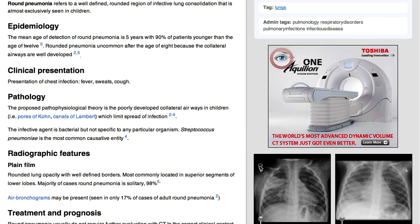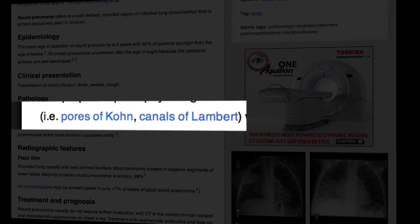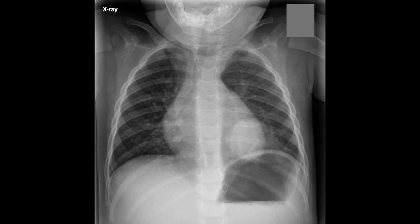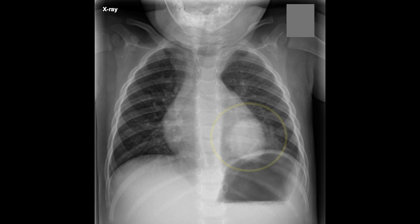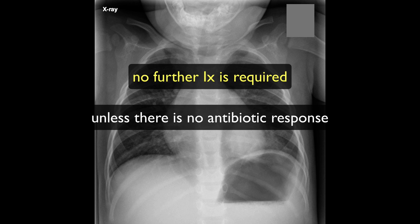These connections between the alveoli are called pores of Cohn and canals of Lambert. The important thing to do here is correctly identify this as round pneumonia and not over-investigate these children. No further investigation is required unless they fail to respond to antibiotic therapy.